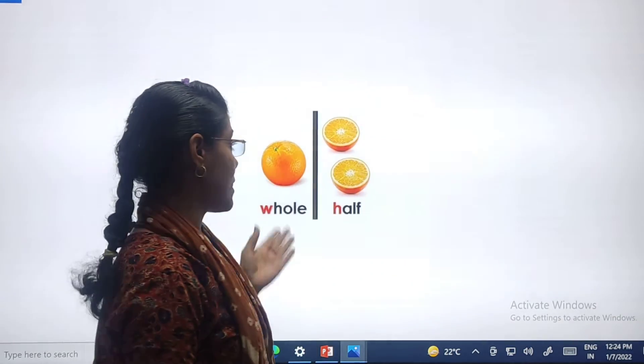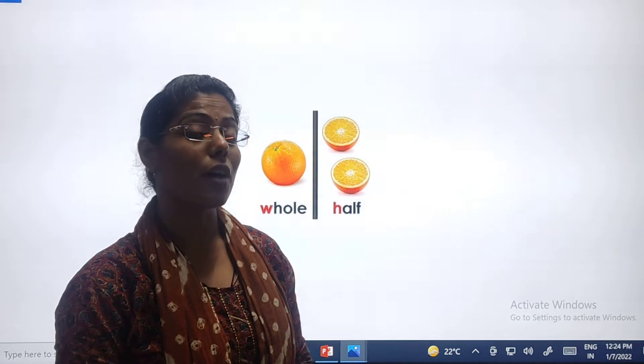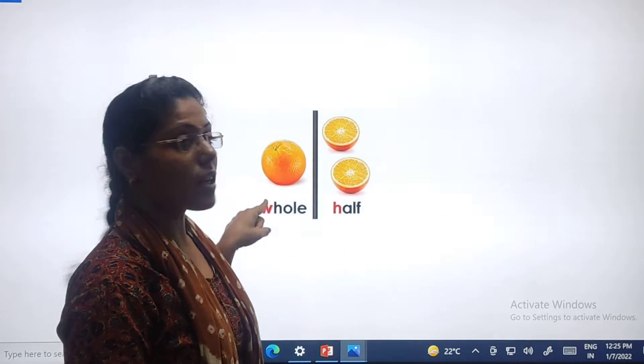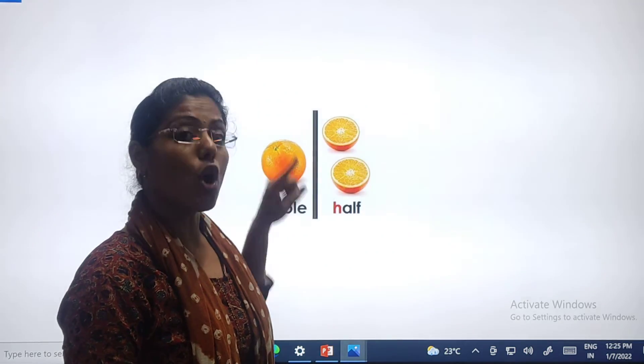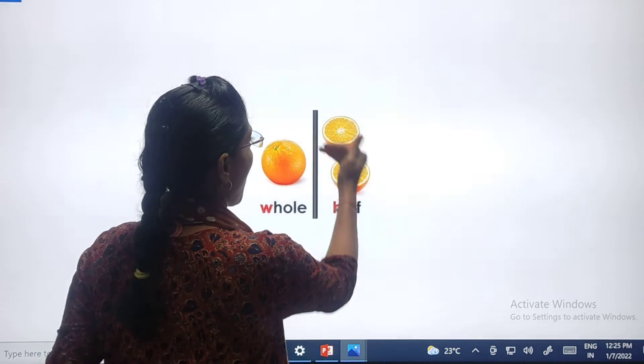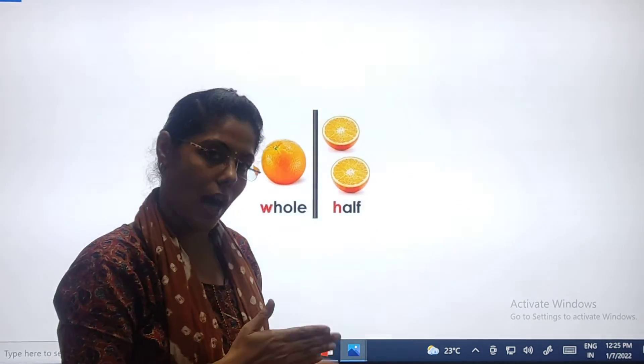Now, this is the picture of a fruit name orange. Yes, again this is the full orange. Full, full, poora. And see, this is half. Half, half here, half here. Aada. Half means aada.